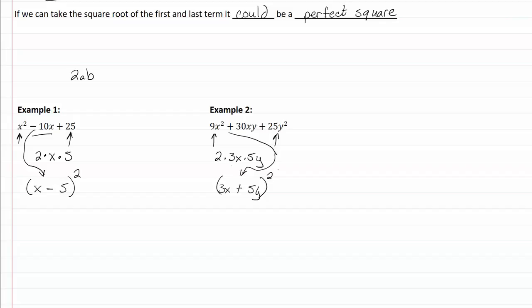Again you can use trial and error, but if you recognize it as a perfect square, it goes fast. So you can do this once. I'll see you next time.